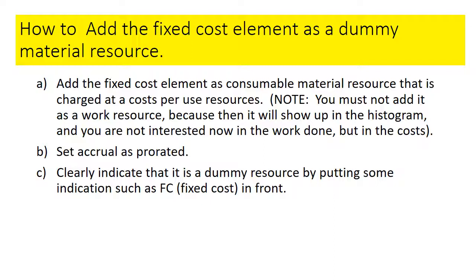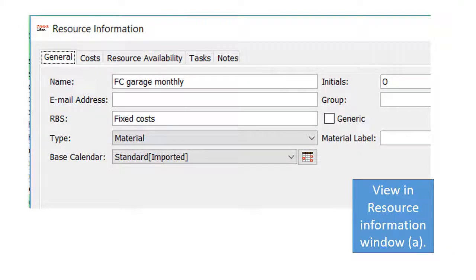For example, in the resource sheet you would have 'Ambulance Service' as the main resource and then an additional entry 'FC Ambulance Service' as the dummy resource. The resource information sheet shows entries like 'FC Garage' or 'FC Monthly' for each instance. This is the resource window where you fill it in as part of the resource breakdown structure, setting the type as Material.